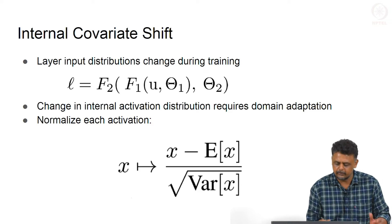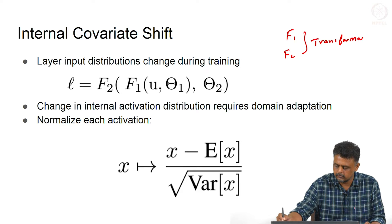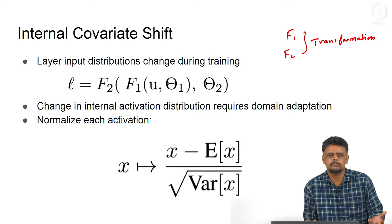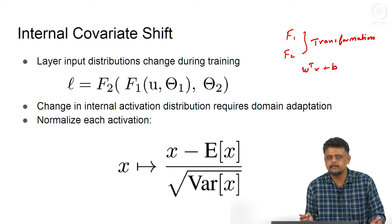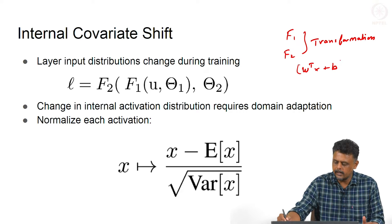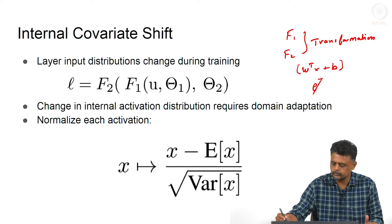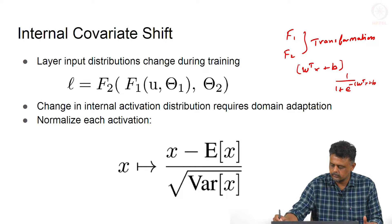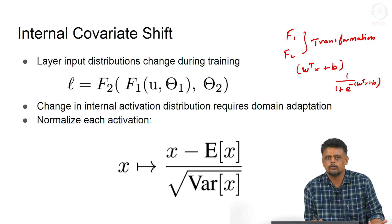Let us consider this in a slightly more functional form. F1 and F2 are some transformations. The transformation that happens in a neural network layer is W transpose X plus B, where X is the input to that layer. This is one transform, and you pass it through a non-linearity. So when W changes with every iteration, the inputs to the particular layer will also dramatically change.